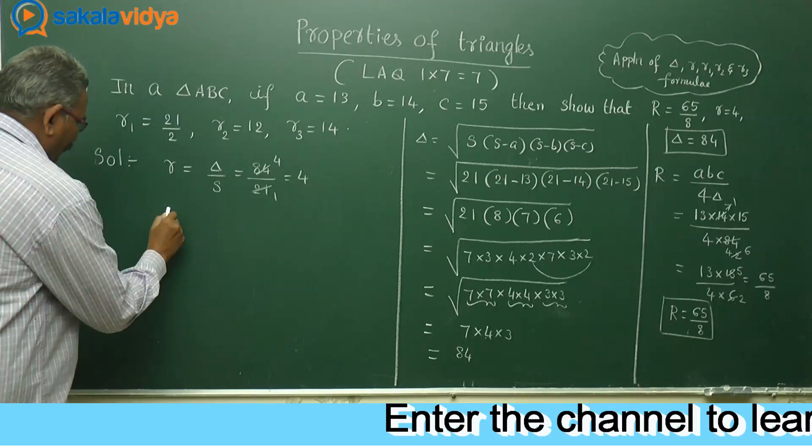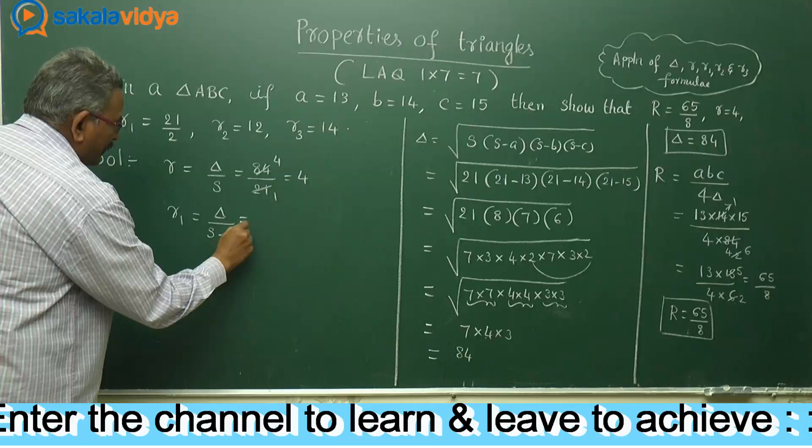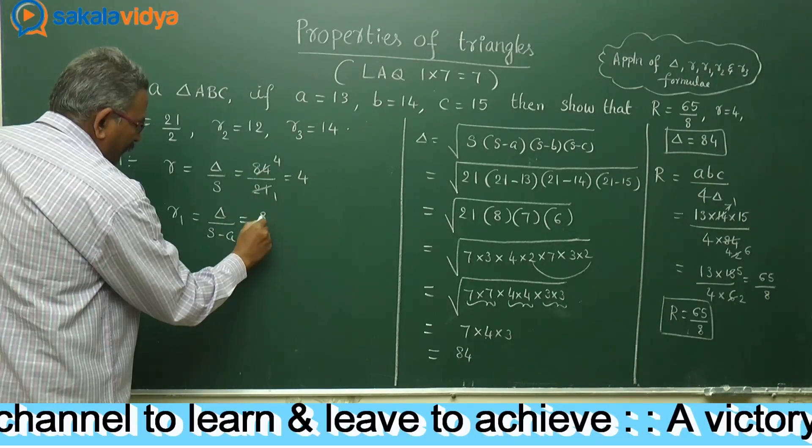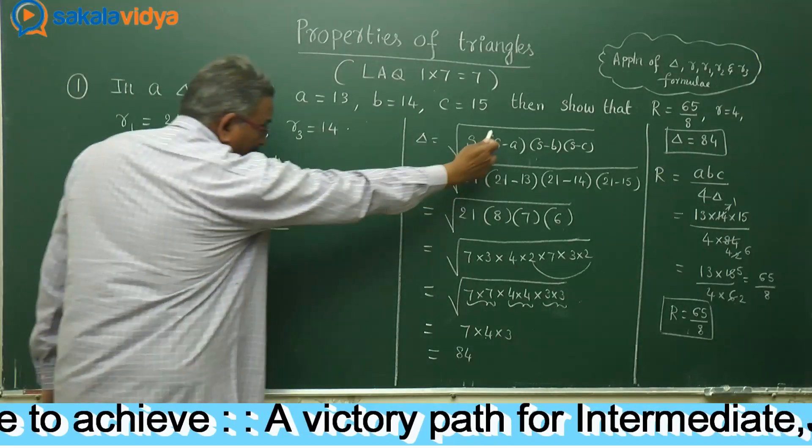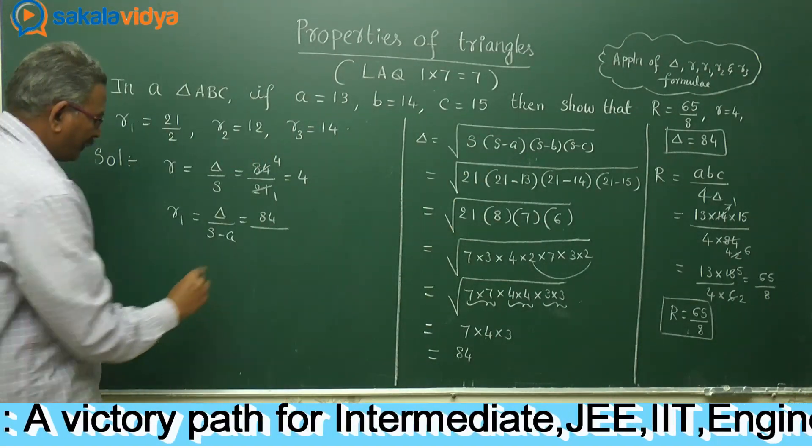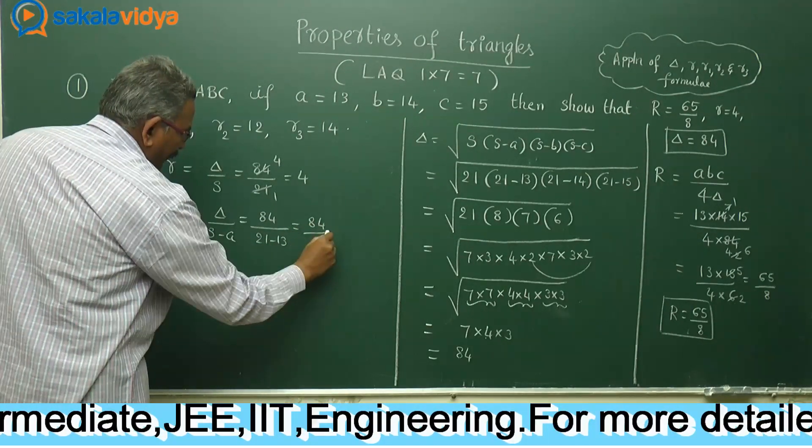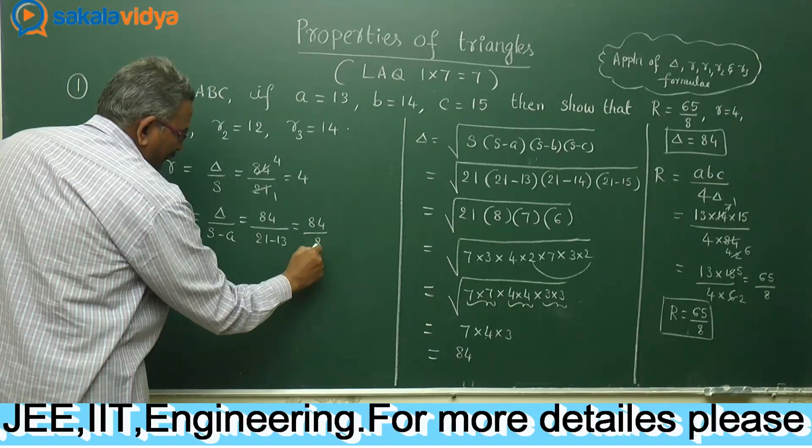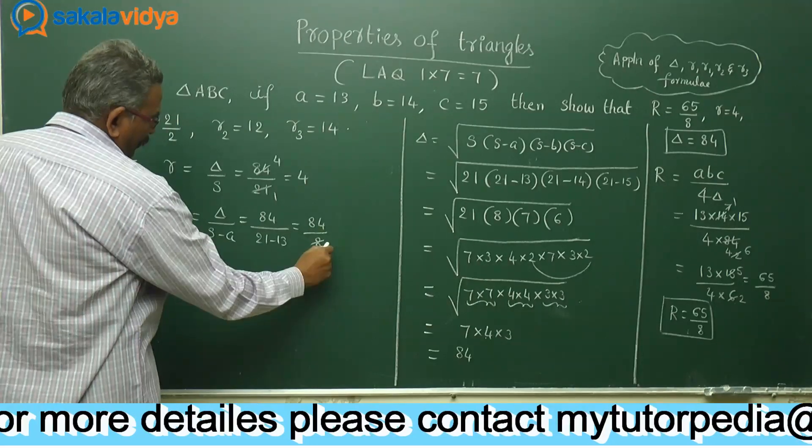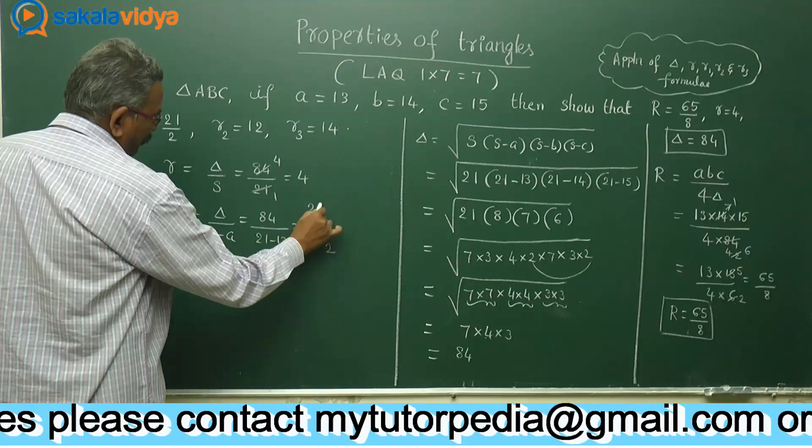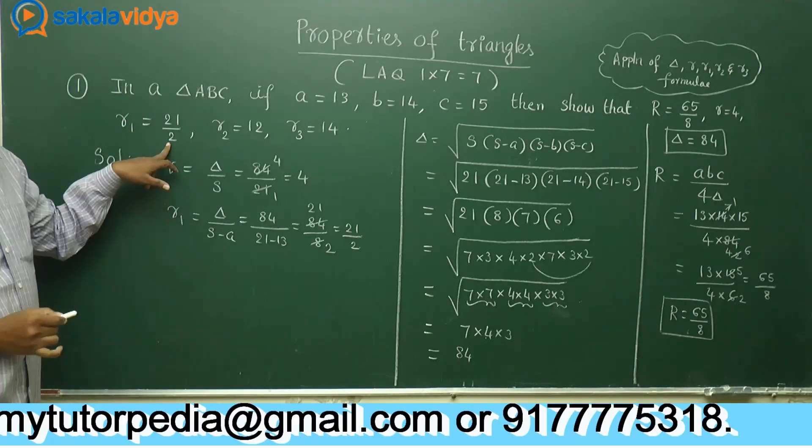Next, R1. Delta by S minus A. Delta is 84, S minus A is 21 minus 13. 84 divided by this is 8. Now this we can write 4, 2, 8, 4, 2, 8, 4, 1. So R1 is 21 by 2.